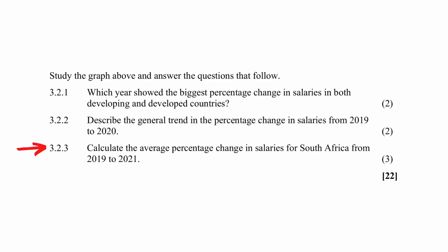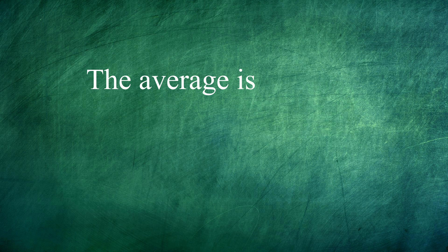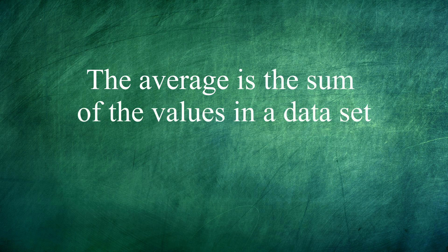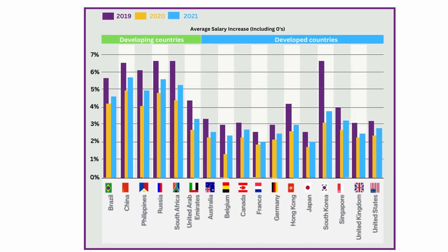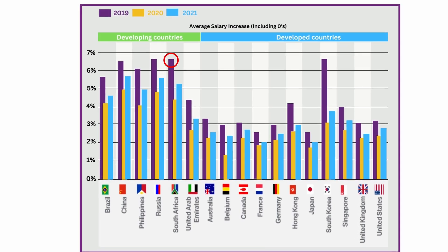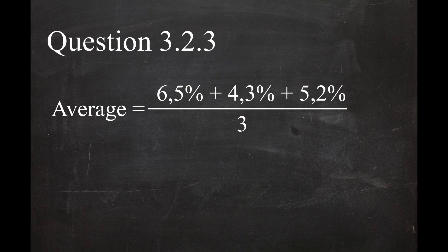In question 3.2.3, you have to calculate the average percentage change in salaries for South Africa. The average is the sum of the values in a data set divided by the number of values in that data set. So the average change in the percentage of salaries is 6.5 plus 4.3 plus 5.2 divided by 3 years, which gives you an average of 5.3%.